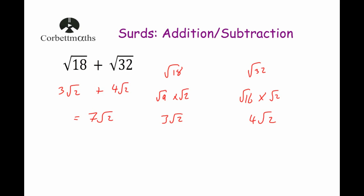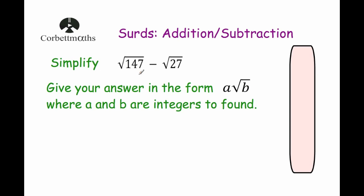Our next example says: simplify Root 147 subtract Root 27, and give the answer in the form A Root B where A and B are integers. Whenever we're doing a question like this, the first step is to simplify the surds — Root 147 and Root 27. That can actually be the hardest part. I tend to start with the smaller number, Root 27, because it might help me out, and I'll show you how later on.